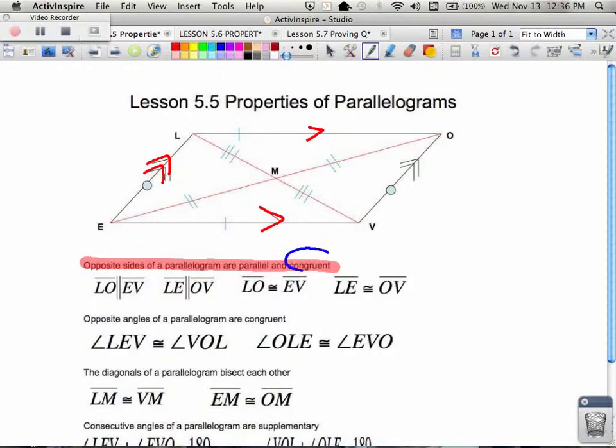So you'll see this congruent statement here as well. That's why we see that segment LE is congruent to segment VO, and segment LO is congruent to segment EV. So opposite sides are not only parallel in a parallelogram, but they are congruent as well.